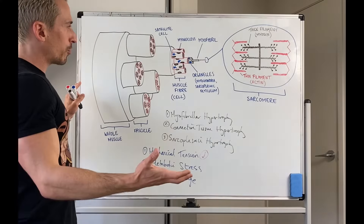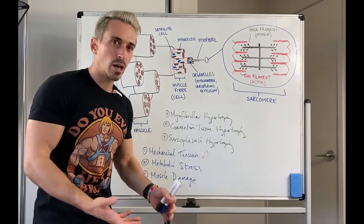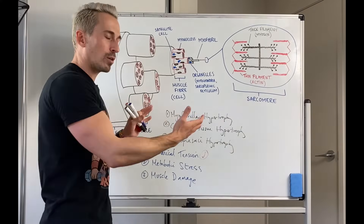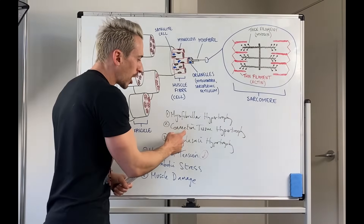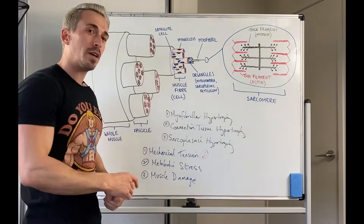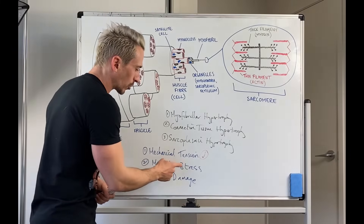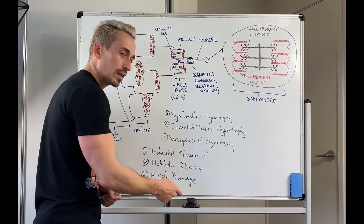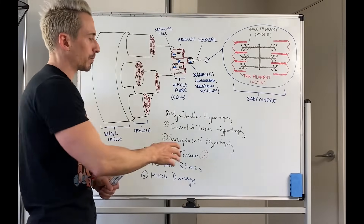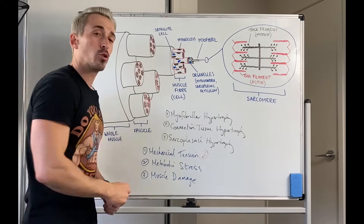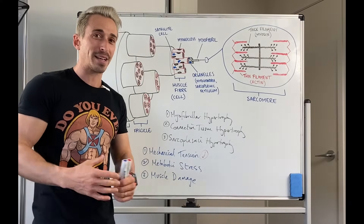So what I've gone through here is the anatomy of the skeletal muscle, the different types of hypertrophy, and the different causes of these particular hypertrophic events. Hopefully that helps and makes sense.